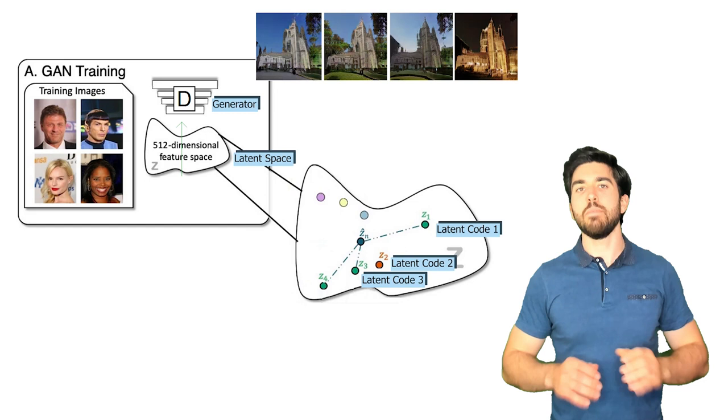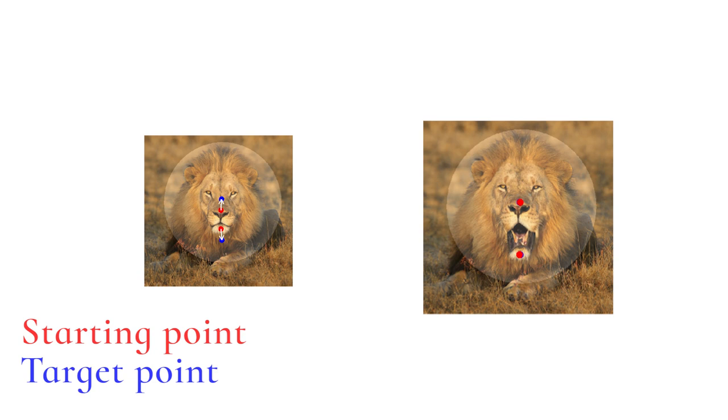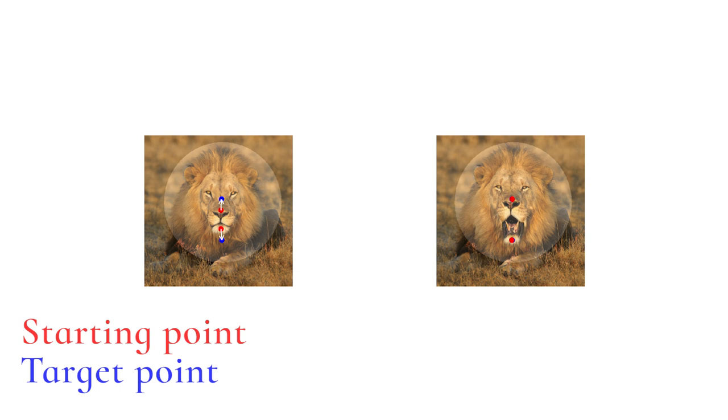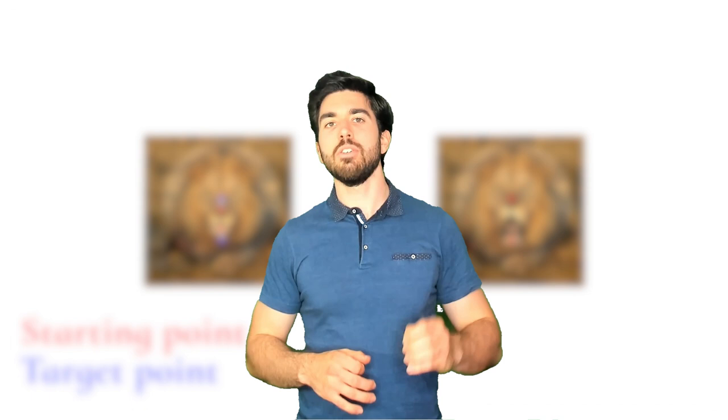Instead of studying how to best generate new images or allow the user to manipulate images with text, they went to another path where the goal is to actually drag a point from A to B. The goal is much more precise: the pixels and objects start at point A and have to be at point B after the mouse dragging is done.